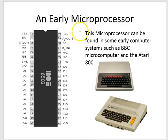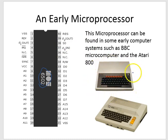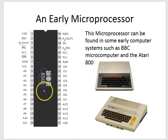I wanted to show you something regarding an early microprocessor — in this case it's the 6502 processor. This was a processor found in the BBC Microcomputer and the Atari 800 computer. These were early computers used for games, research, and all sorts of things, and they used this 6502 microprocessor.